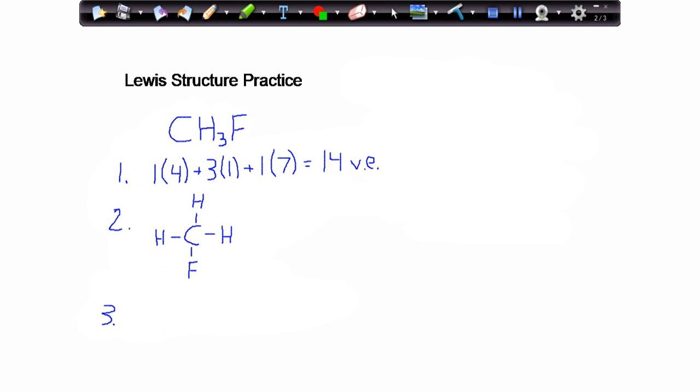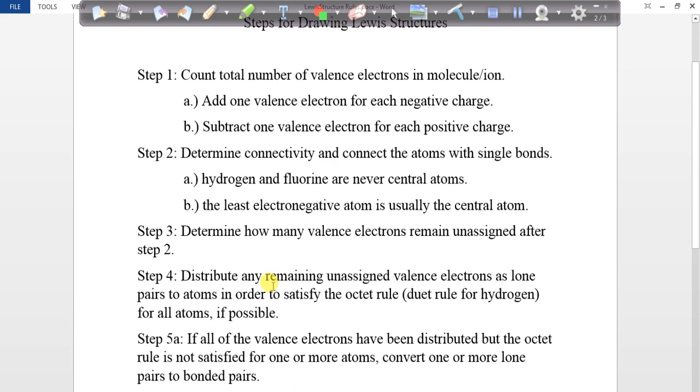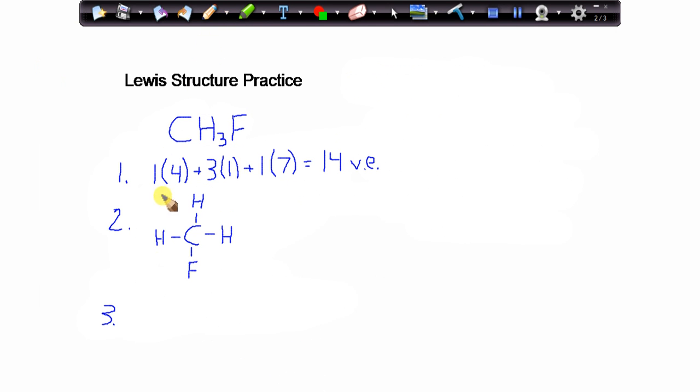In step three then, I want to take a step back, pause my approach, and determine how many valence electrons have I used up, how many valence electrons remain unassigned. So to do that, I want to first recall that I start off with 14 valence electrons, and then in step two, drawing those four single covalent bonds, I've used—remember each single covalent bond represents two valence electrons—I've used up eight of my original 14 valence electrons simply by adding the minimal connectivity to my central carbon atom.